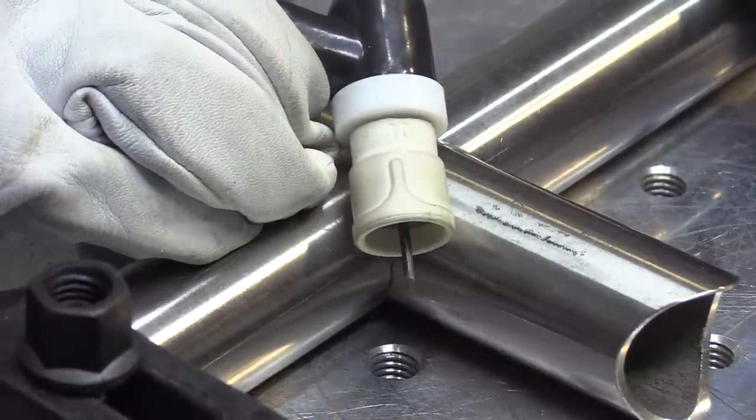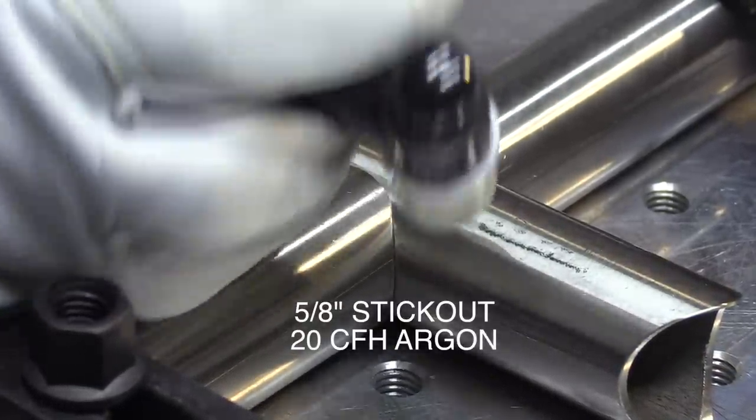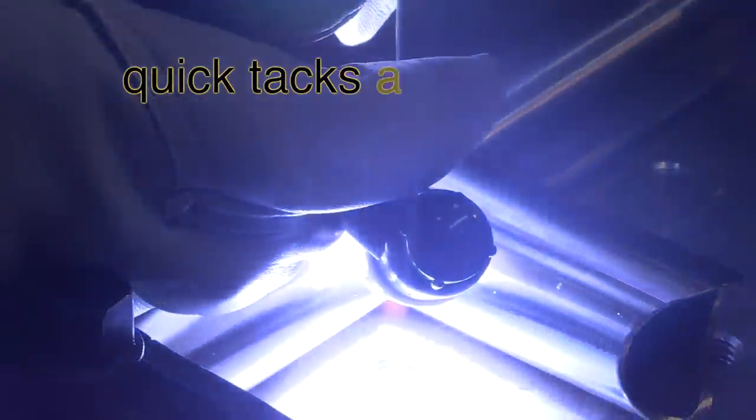You can use a nice long stick out. A good five-eighths, even three-quarters, no problem. 20 CFH. Really, I've used the same gas flow as I used with the number eight on this 10 cup.